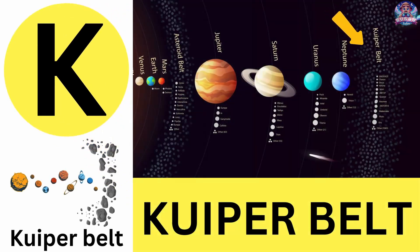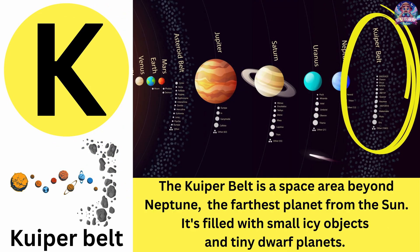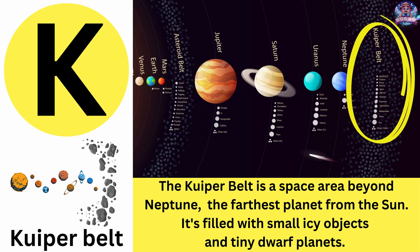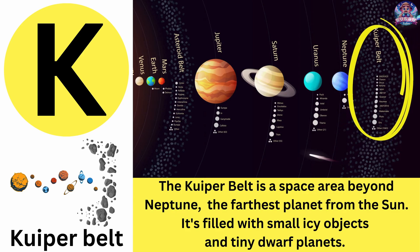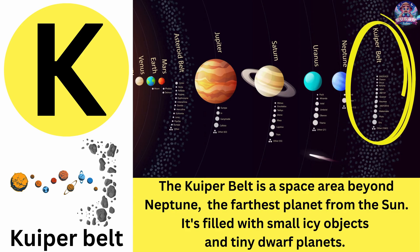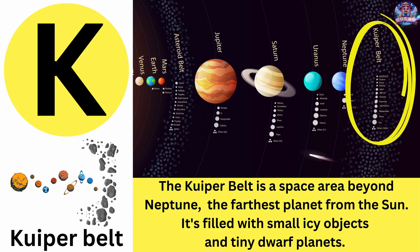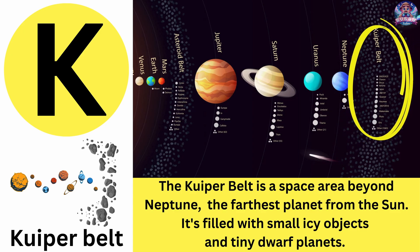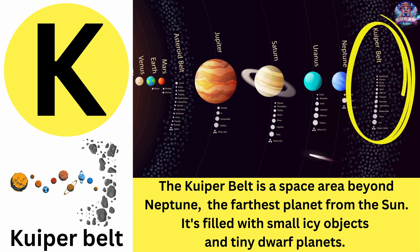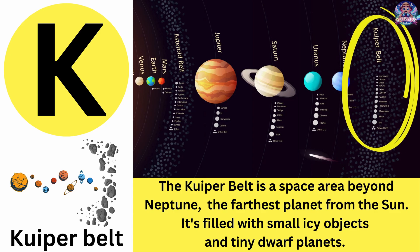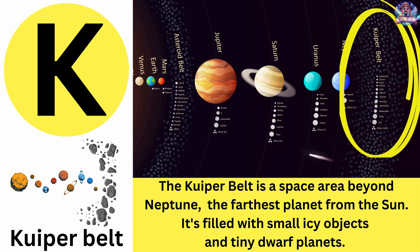K. K is for Kuiper Belt. The Kuiper Belt is a space area beyond Neptune, the farthest planet from the sun. It's filled with small icy objects and tiny dwarf planets. Kuiper Belt.